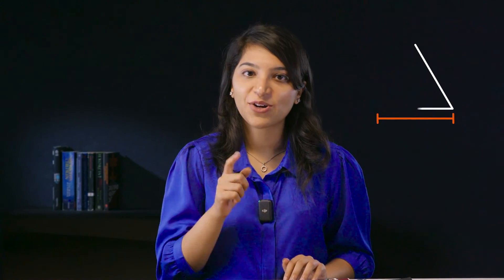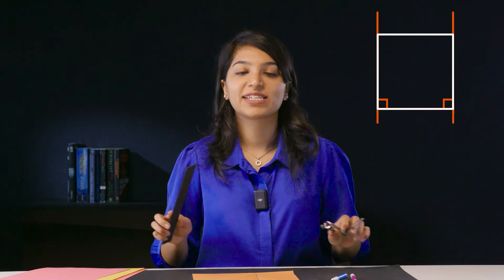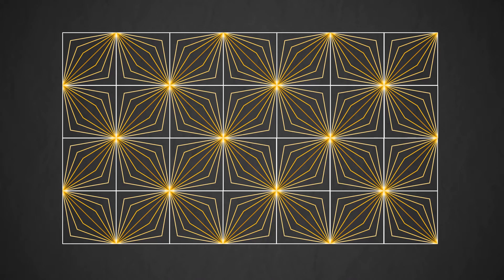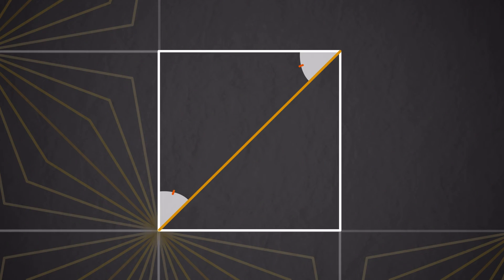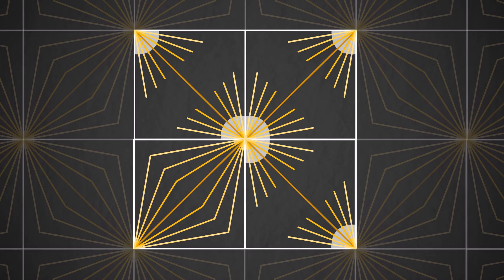Now here's a challenge for you. Say we have a line segment. How can we draw an equilateral triangle whose sides match its length? How about a square? Remember, you can only use these two tools. In fact, you can even make this beautiful pattern using only angle bisectors. Try it and let us know your approach in the comments.